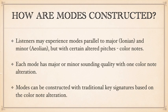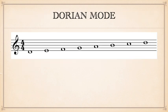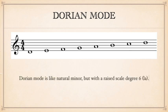Each mode sounds like the major or minor mode tonic, but has one pitch altered. Once the mode is constructed, you can represent it with a traditional key signature based on that altered note, just with a new tonic. Dorian mode relative to C major is D to D. Parallel to D natural minor, it has raised scale degree six, or La. So our solfege goes: Do, Re, Me, Fa, Sol, La, Te, Do.